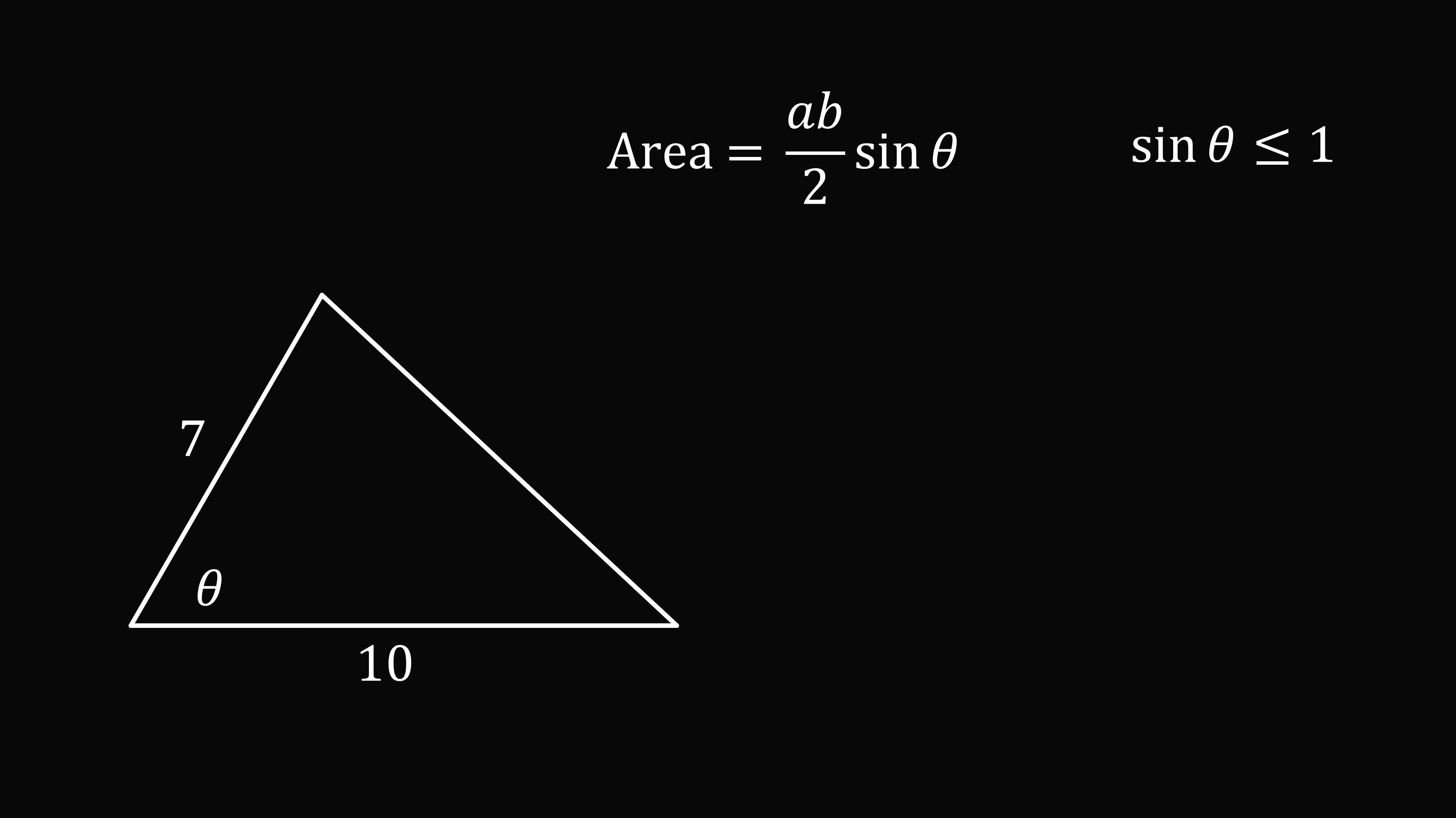We know the maximum possible value of sine theta is 1 and that occurs when theta is equal to 90 degrees. Substituting in, the largest possible area is 1 half multiplied by 7 multiplied by 10 and that's 1 half of 70 which is equal to 35.